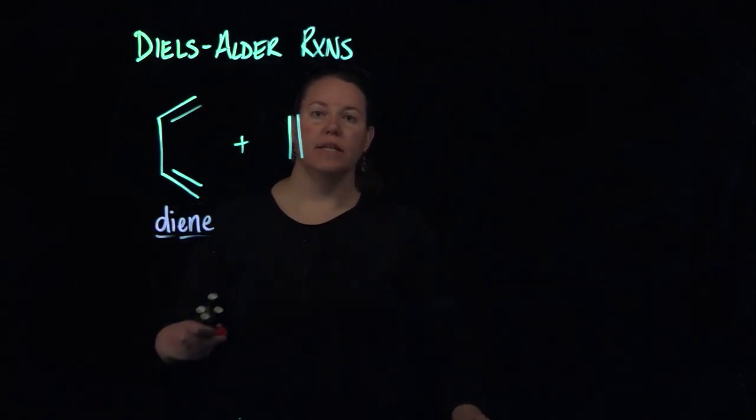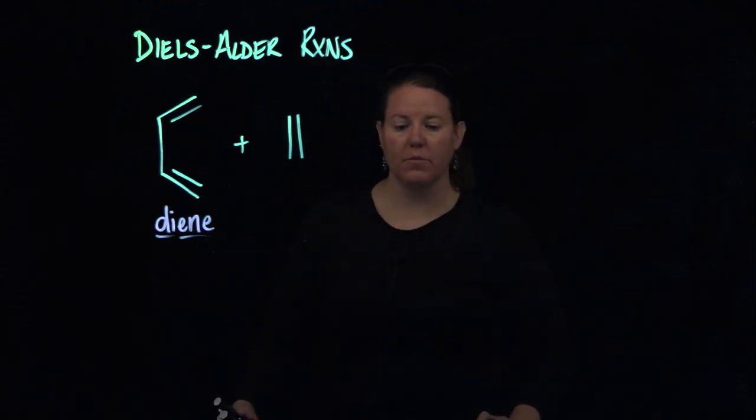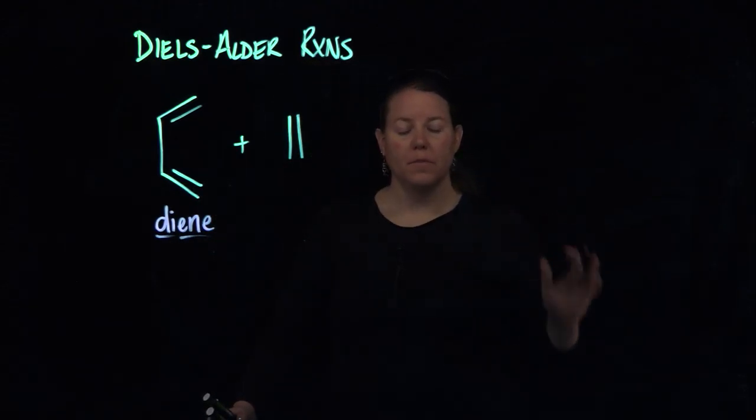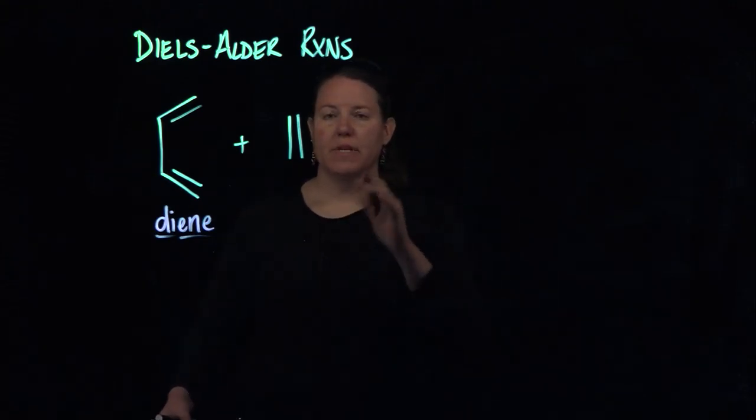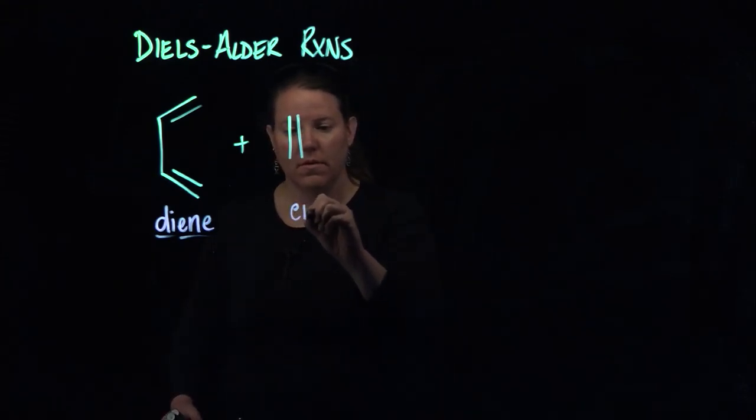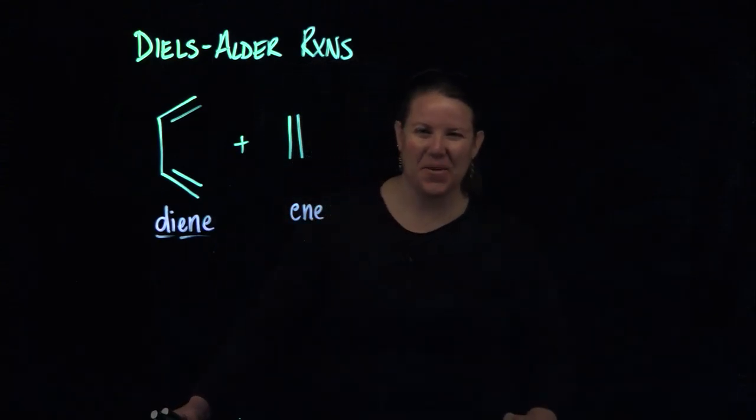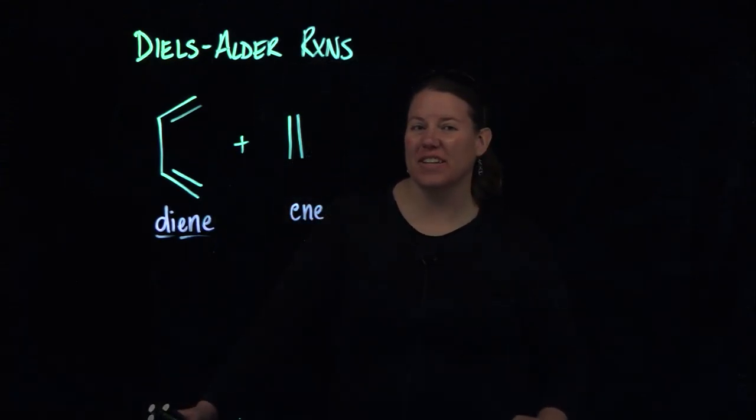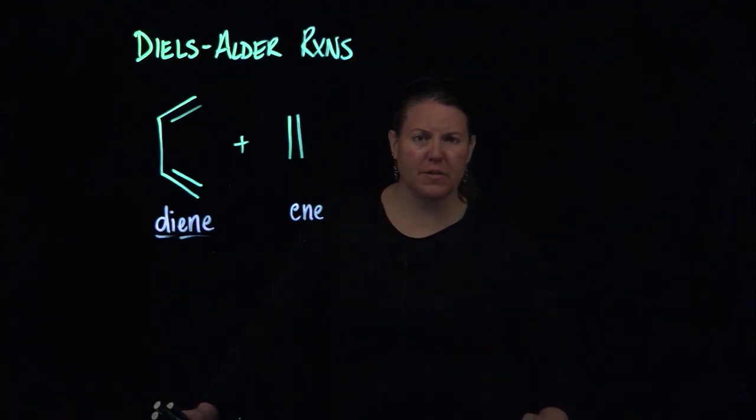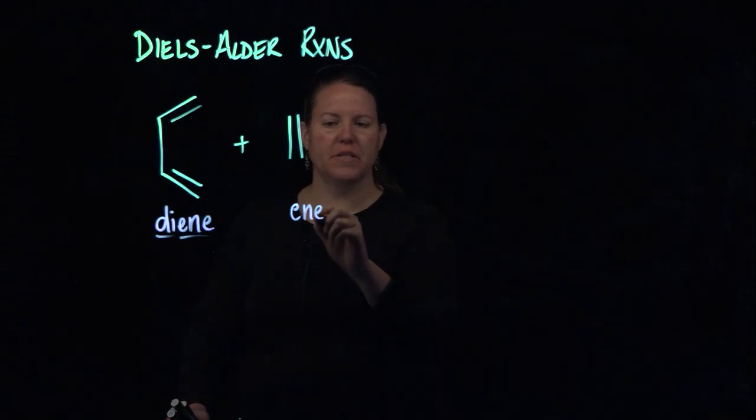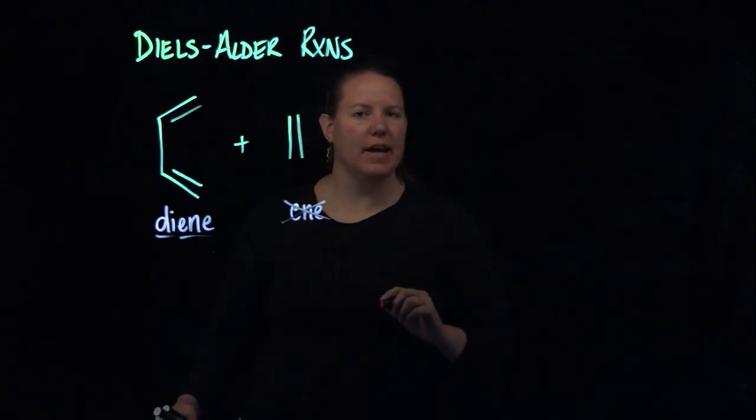The diene you can always tell because it has two double bonds, that's what a diene is. And in this case, yes it needs to be a conjugated diene, which we learned in the last video means that it has alternating single and double bonds. Then you have this ene, or a double bond, some kind of pi bonds. And they don't call this one the ene, they call it the dienophile.